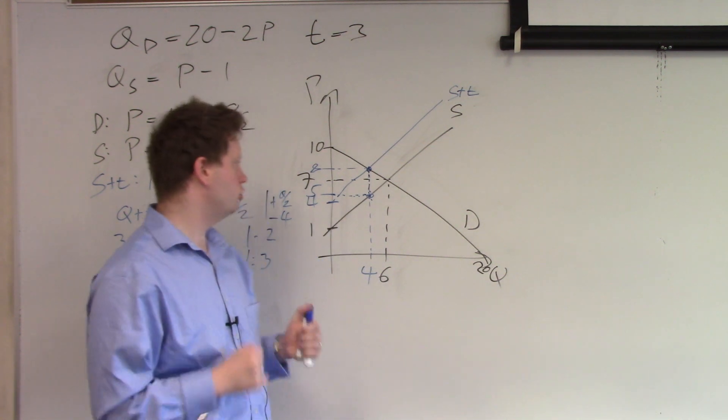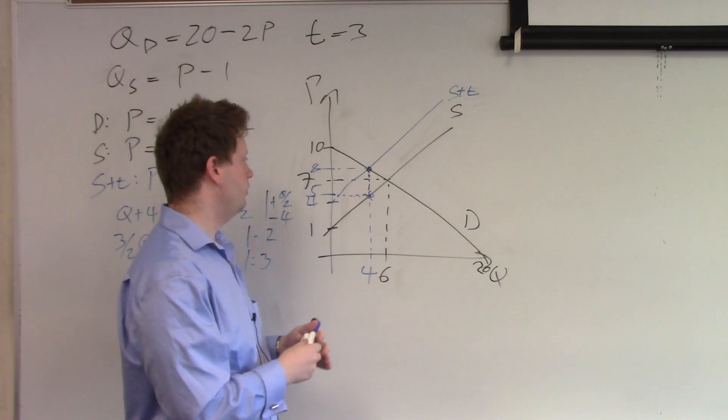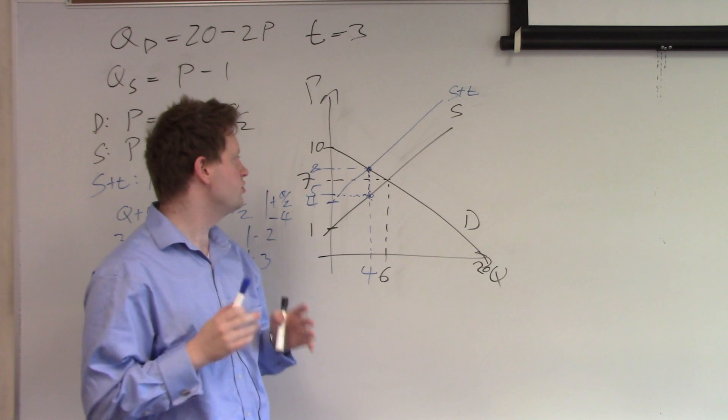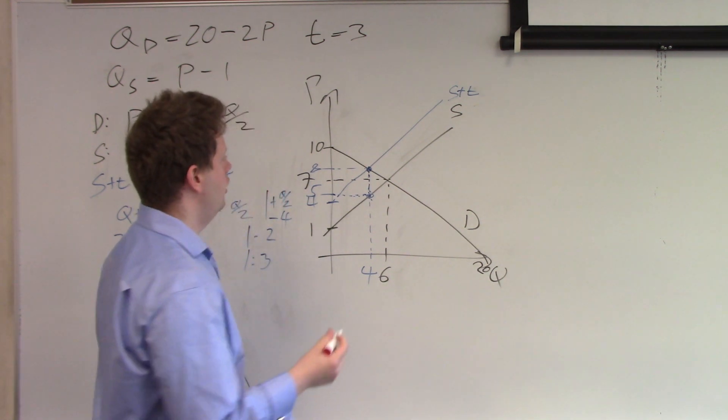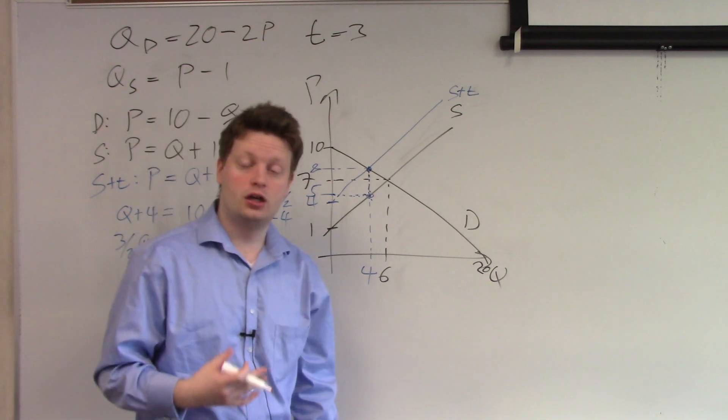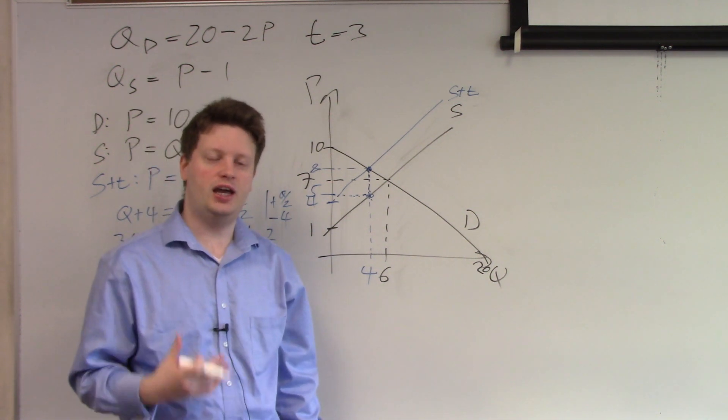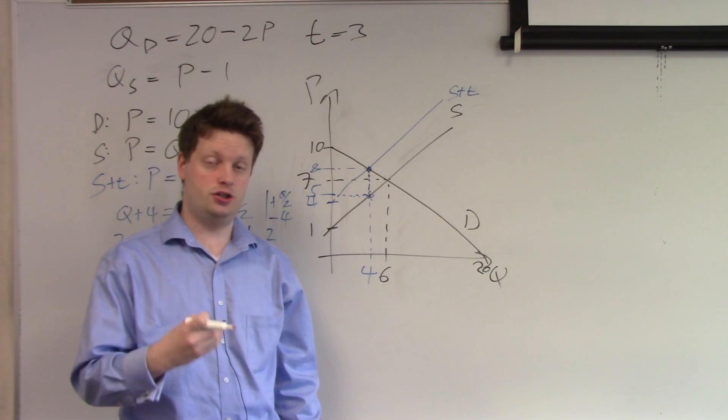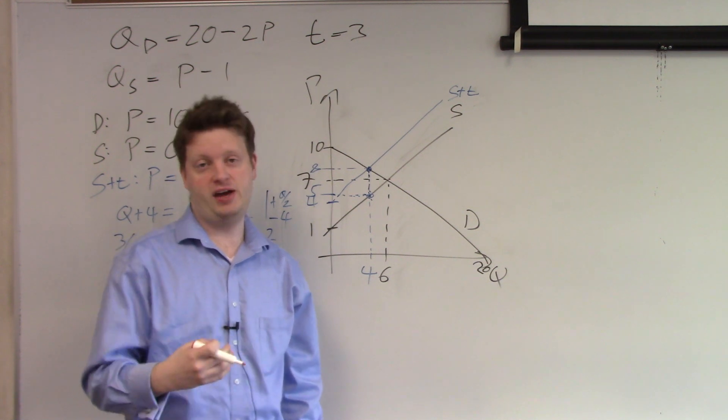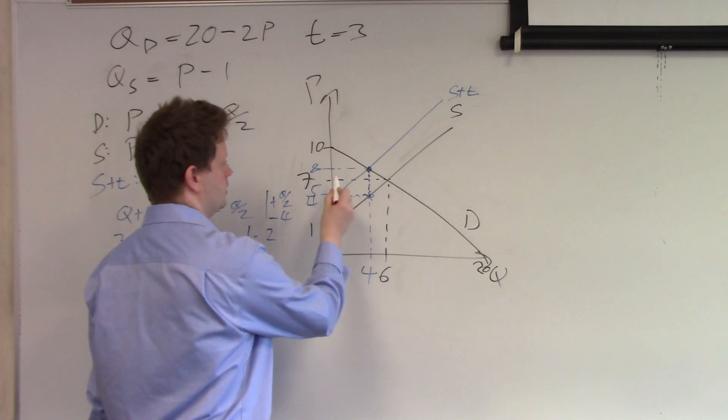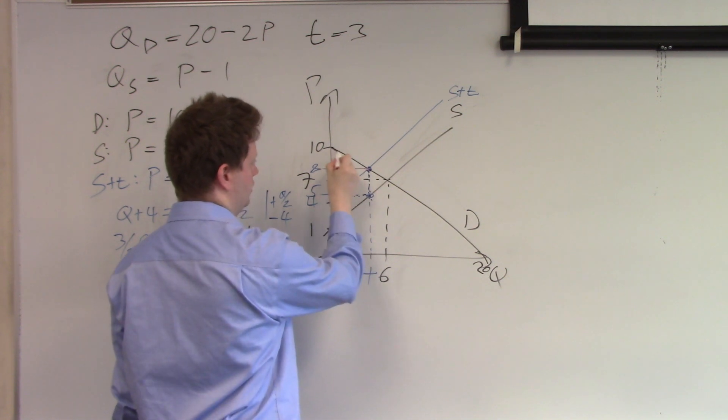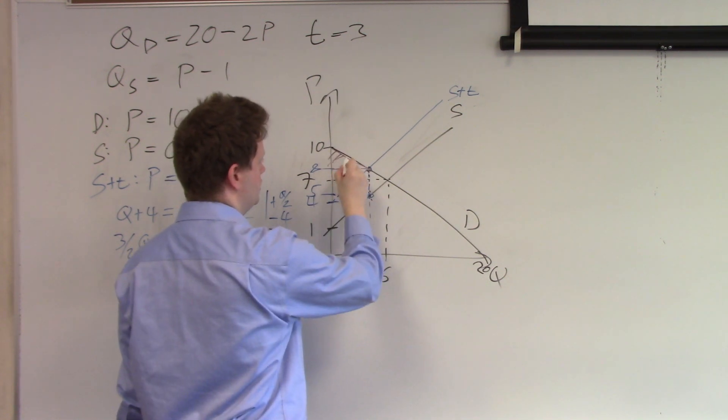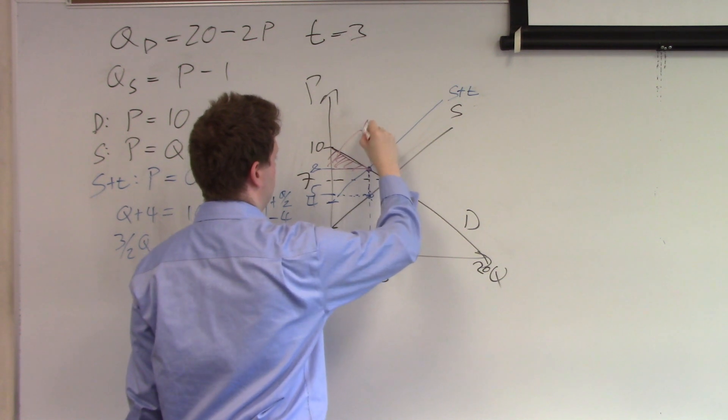Now we can think about the welfare in this case. We calculated all the relevant points we need. Let's start with consumer surplus. Consumer surplus is defined as the area above the price consumers pay and below demand. The price consumers pay is 8. Demand is this line here. So this is consumer surplus.